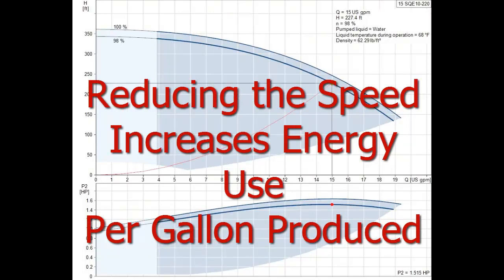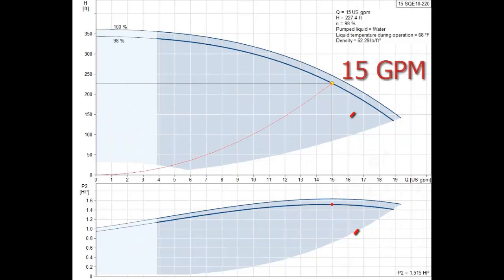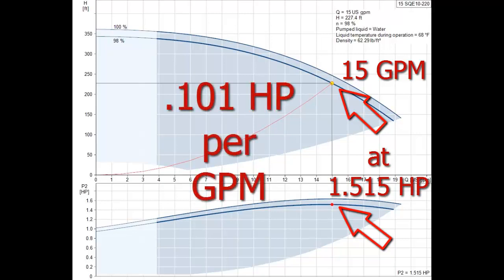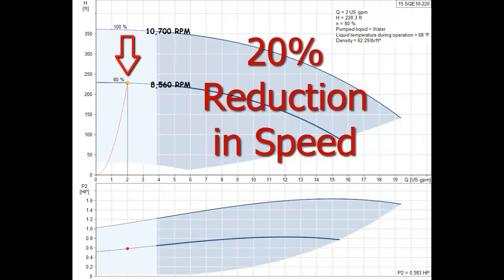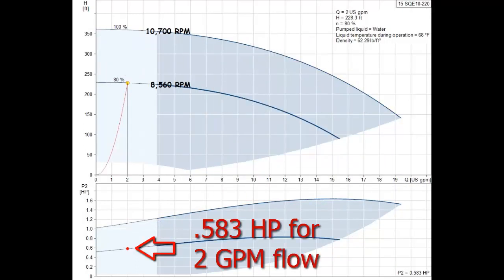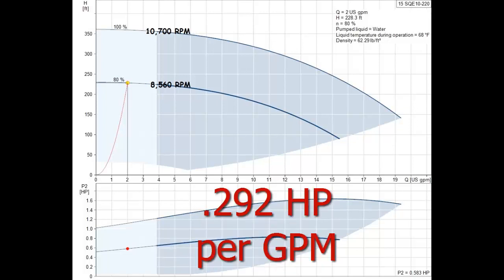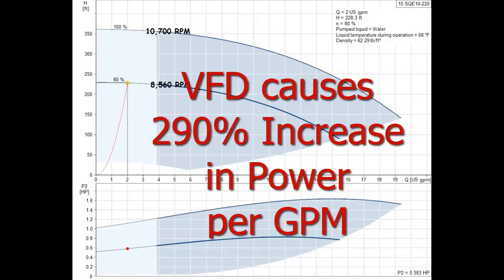Looking again at the maximum flow, producing 15 gallons per minute with 1.515 horsepower is using 0.101 horsepower per gallon per minute produced. This pump, slowed down by 20% is still using 0.583 horsepower for only 2 gallon per minute flow, which is 0.292 horsepower per gallon per minute produced. That is a 290% increase in energy use at low flow caused by varying the speed with a VFD.